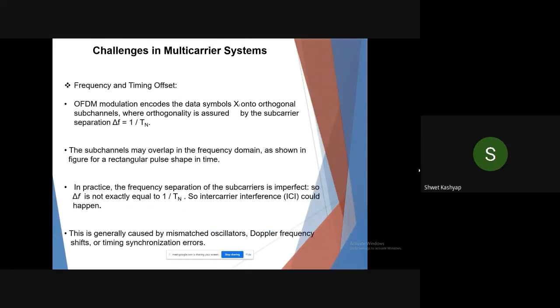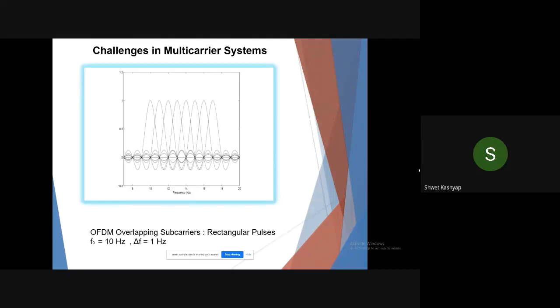The second challenge in MCM is frequency and timing offset. OFDM modulation encodes the data symbols X onto orthogonal sub-channels where orthogonality is assured by the subcarrier separation delta f equals 1 over T_n. The sub-channels may overlap in the frequency domain, as shown in the figure. In practice, the frequency separation of the subcarriers is imperfect, so delta f is not exactly equal to 1/T_n, so inter-carrier interference (ICI) could happen. This is generally caused by mismatched oscillators, Doppler frequency shifts, or timing synchronization errors. The figure shows overlapping subcarriers with rectangular pulses with frequency 10 hertz and delta f equals 1 hertz.